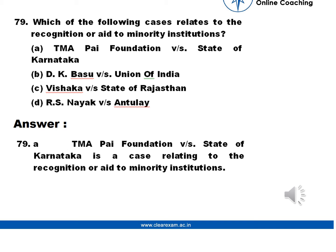Q79. Which of the following cases relates to the recognition or aid to minority institutions? a. TMA Pai Foundation vs. State of Karnataka. b. DK Versu vs. Union of India. c. Vishakh vs. State of Rajasthan. d. RS Naik vs. Antulay.